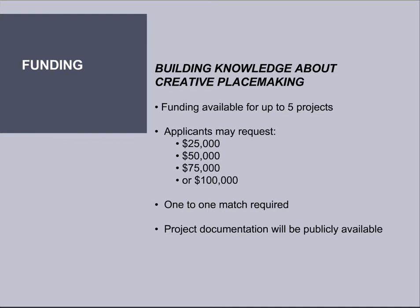We're piloting this this year and making funding available for up to five projects. Applicants can request between these exact amounts: either $25,000, $50,000, $75,000, or $100,000. There is a one-to-one match required — so if you're applying for $100,000, your entire project budget must be $200,000. You can match with in-kind and with staffing costs. You do not have to have all match sources completely lined up in your application — you can just tell us where you think it's going to come from. Additionally, project documentation will need to be made publicly available. We're requiring a final report that we can post on our website — we want the whole country to learn from what you learned through your project.